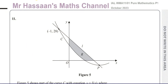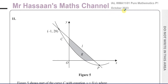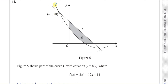Welcome back, this is Mr. Hassan's maths channel. I'm going to go through question number 11, which is the final question of the October 2023 Pure Mathematics P1 International A Level Edexcel exam. This question tells us about figure 5, which is a curve or part of the curve C with equation y equals f(x), where f(x) equals 2x² minus 12x plus 14.